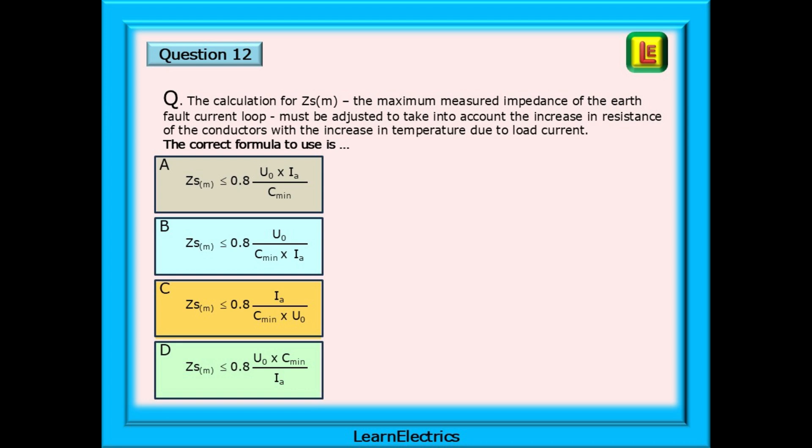And finally, to question 12, the calculation for ZSM, the maximum measured impedance of the earth fault current loop, must be adjusted to take into account the increase in resistance of the conductors with the increase in temperature due to load current. The correct formula to use is and a choice of four similar formulas. But which one? Pause the video and find an answer.